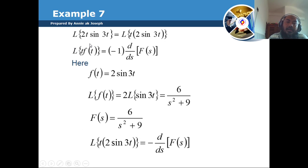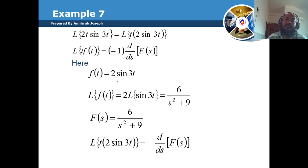So we have Laplace of 2t·sin(3t) equal to Laplace of t multiplied with 2·sin(3t). Here we can identify f(t) = 2·sin(3t). So Laplace of 2·sin(3t) is equal to 6 divided by s squared plus 9.